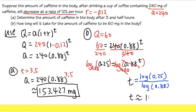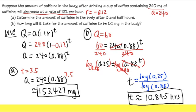So t will be approximately 10.845, and this is hours. So it seems like the coffee, if it's 240 milligram, it would last you for like 10, 11 hours. So that in the end, you actually get like 25% of what you have drunk originally. But anyway, this is it.